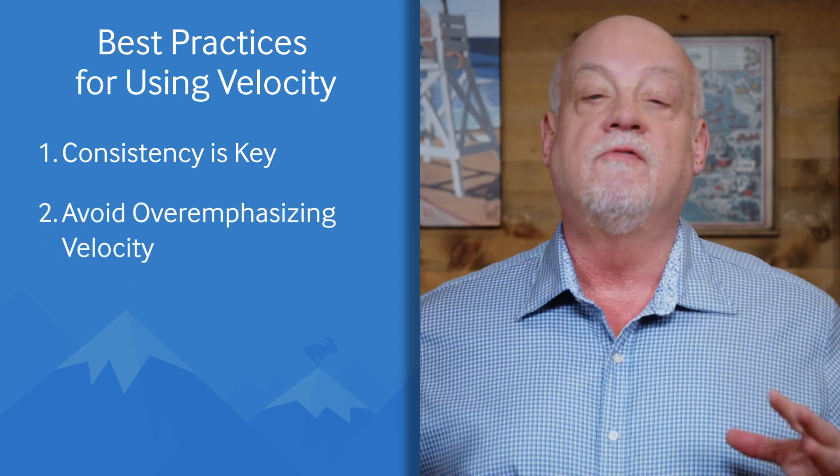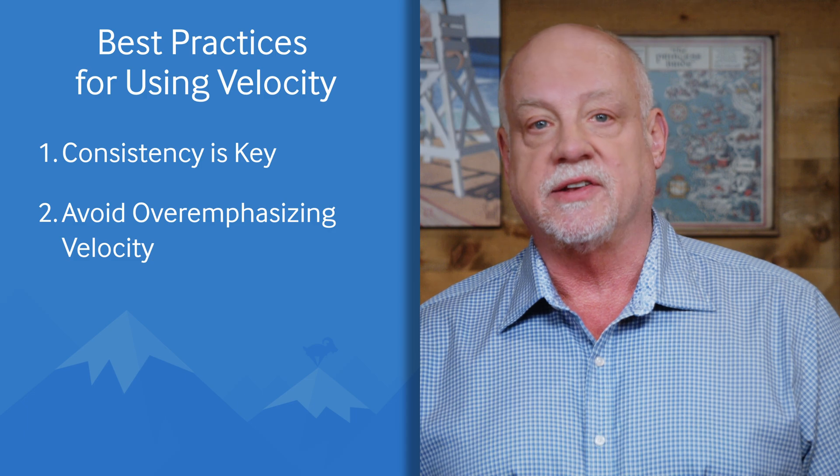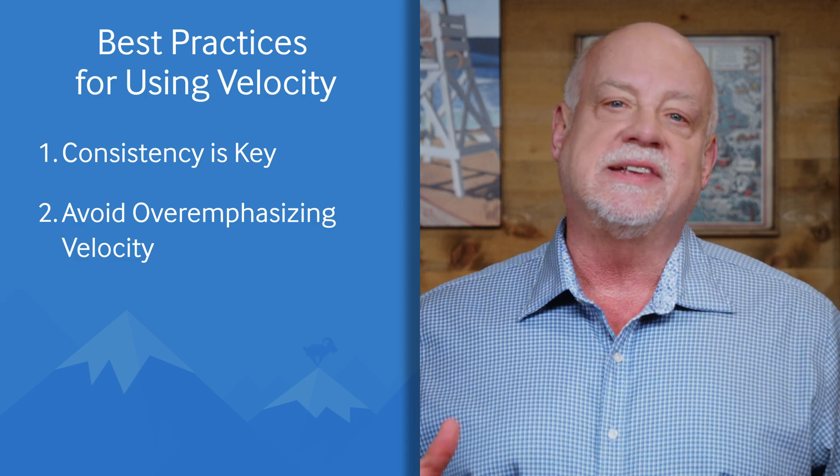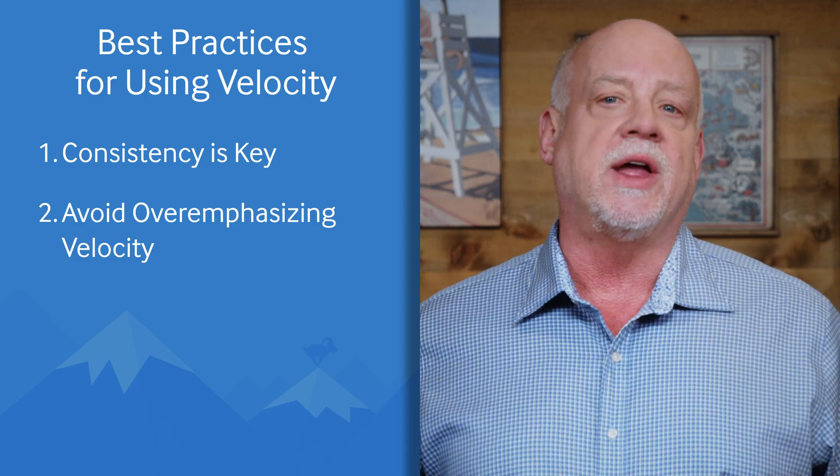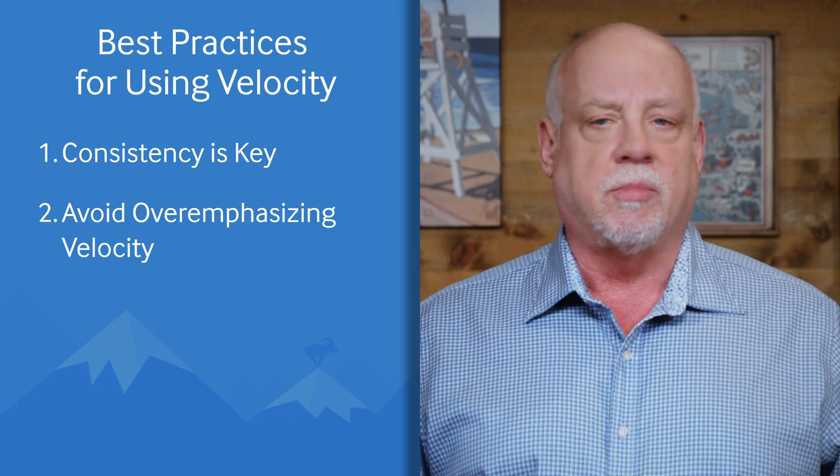Number two: avoid overemphasizing velocity. Although velocity is an important metric, a team's primary aim is to deliver meaningful products or features. Overemphasizing velocity can result in teams compromising on quality or resorting to excess overtime. While overtime can provide a temporary boost in velocity, relying on it continuously leads to product defects and employee burnout.